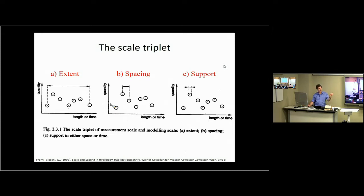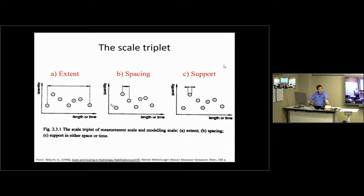When thinking of things in time instead of extent we say horizon, meaning the duration of the data, and spacing means how frequently measurements are made — like five-minute data. Support means over what interval of time the number represents the physical phenomenon. For precipitation every five minutes, we measure the total rain over that five-minute interval, so spacing and support have the same length. For flow or discharge, we measure instantaneously, so it has instantaneous support — similar to temperature. So precipitation has interval support while flow has instantaneous support.